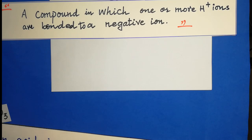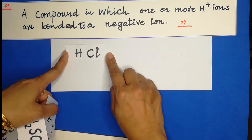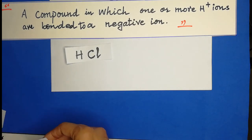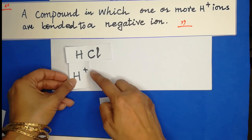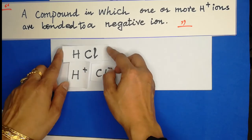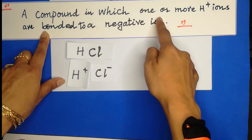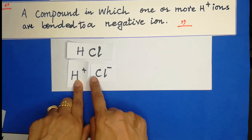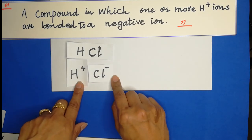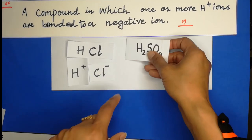If we have hydrochloric acid, we can see how this definition can be justified. In HCl, one hydrogen ion and one Cl⁻ ion is present. A compound in which one or more hydrogen ions are bonded to the negative ion — Cl⁻ is the negative ion and H⁺ is the positive ion, which is going to be bonded with the chloride ion.